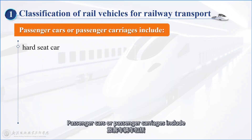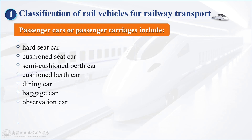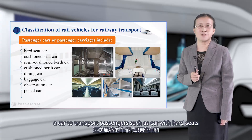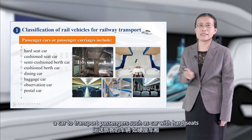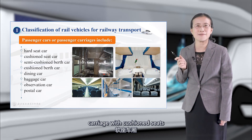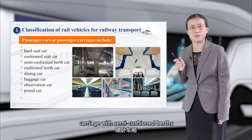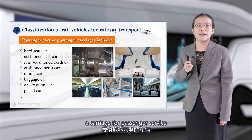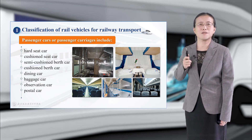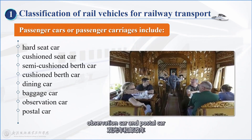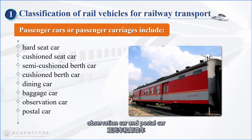Passenger cars or passenger carriages include cars to transport passengers, such as a car with hard seats, a carriage with cushioned seats, carriage with semi-cushioned berths, and a carriage with cushioned berths. They also include carriages for passenger service, such as a dining car, baggage car, observation car, and postal car.